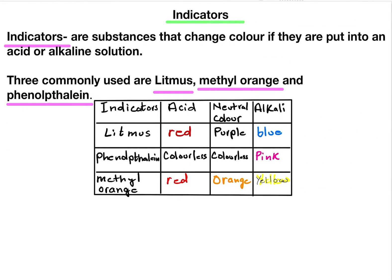Now we move on to indicators. Indicators are substances that change color when placed into an acid or an alkaline solution. Three commonly used indicators are litmus paper or solution, methyl orange, and phenolphthalein. Looking at the table, we have the indicator's color in acid, its neutral or original color, and its color in alkali.